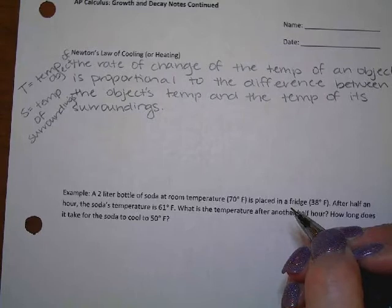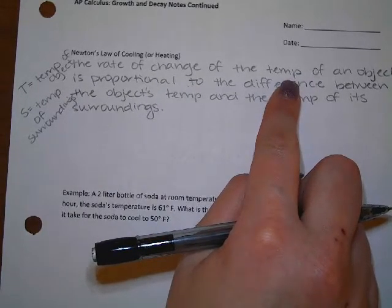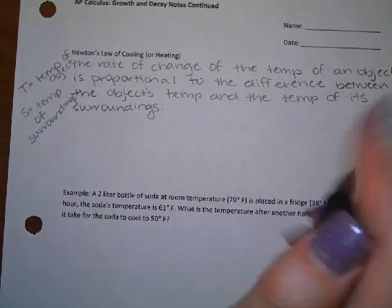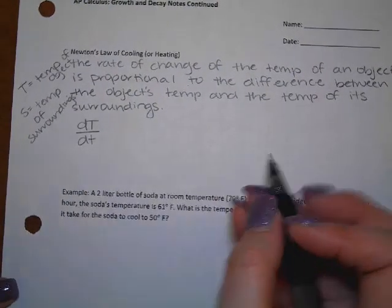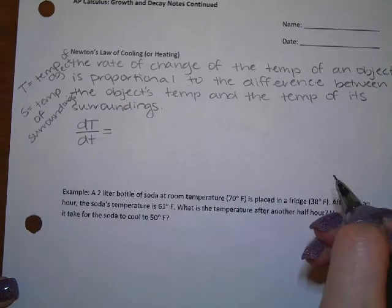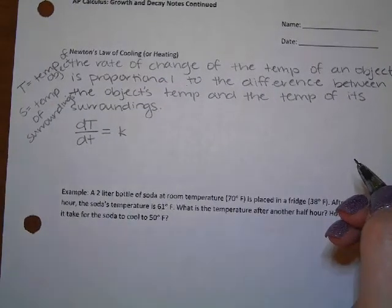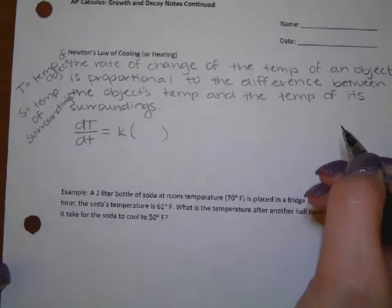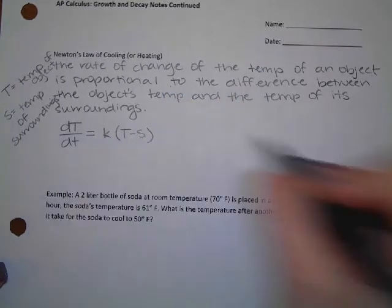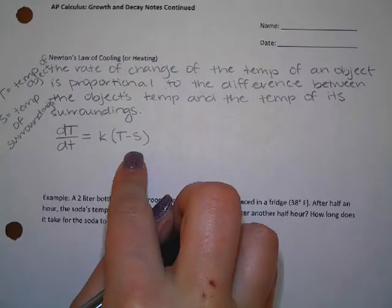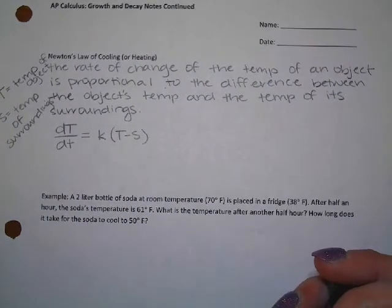So using calculus notation, how do I write rate of change of the temperature of an object? Think back to like related rates. dT/dt. So the rate of change of the temperature of an object is proportional to - they use K as the constant of proportionality - proportional to what? Original temperature minus S. So T minus S. So this mathematical equation is exactly what that sentence said. Those are the same.